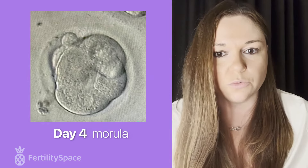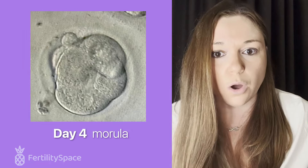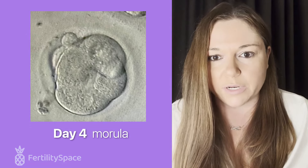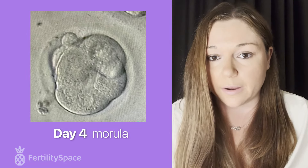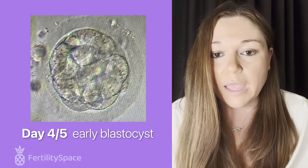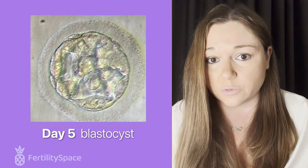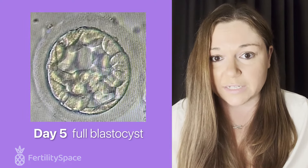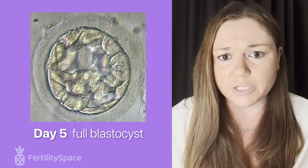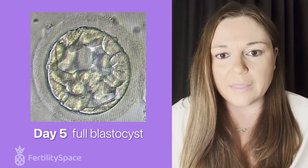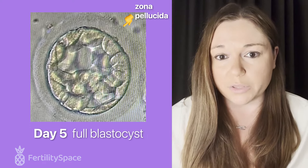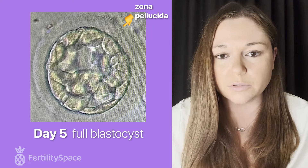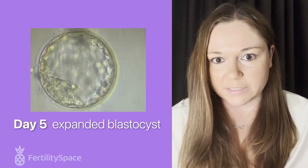The blastocele cavity starts very small and then grows exponentially overnight. The cavity can grow to take up about 50% of the entire embryo — at that point we call it a blastocyst. The embryo continues to grow as cells divide. It becomes a full blastocyst when the blastocele takes up almost 100% of the embryo. After that, the zona — the shell around the embryo — starts to thin out as the embryo and blastocele grow, and that's known as an expanded blastocyst.